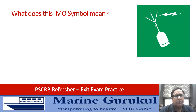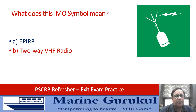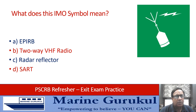What does the symbol on the screen represent? EPIRB, two-way VHF radio, radar reflector, or SART? The answer is A — EPIRB. The symbol on the screen is for the EPIRB.